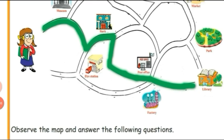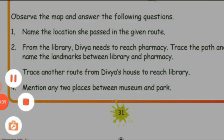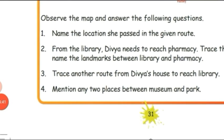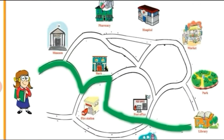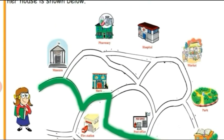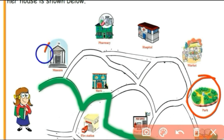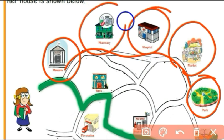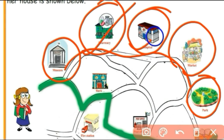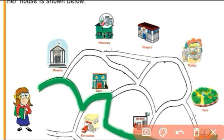Next question: mention any two places between Museum and Park. There are three landmarks between them — Pharmacy, Hospital, and Market. You can mention any two of these.